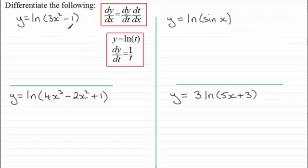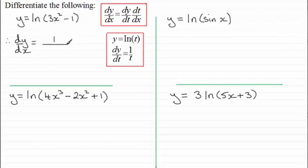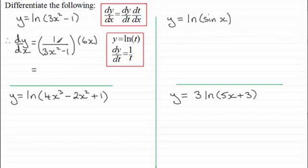Let's start with the first one: y equals the natural log of 3x squared minus 1. I let t equal 3x squared minus 1. So differentiating by the chain rule, dy/dx equals dy/dt — which is 1 over t, i.e., 1 over (3x squared minus 1) — multiplied by dt/dx. Differentiating 3x squared minus 1 with respect to x gives 6x. Simplifying, we get 6x all over (3x squared minus 1).